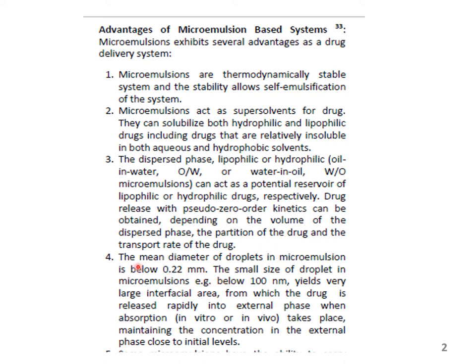It has been reported that the mean diameter of the droplets in the microemulsions is below 0.22 millimeters. The small size of the droplet, below 100 nanometers, yields a very large interfacial area from where the drug is released rapidly into the external phase or the GI fluid where absorption takes place. Thus, it maintains the concentration in the external phase constant over a long period of time and as close to initial levels as possible.